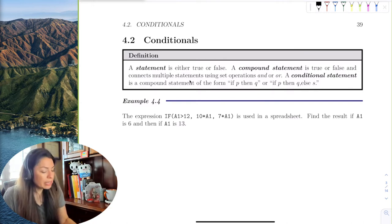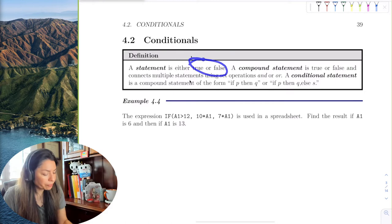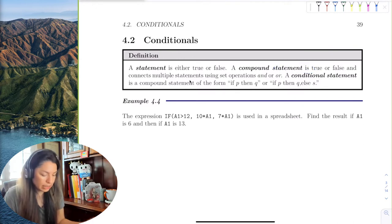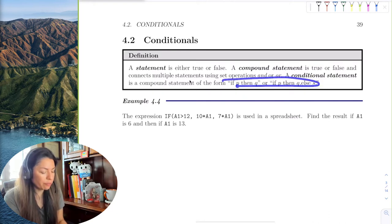A statement is either true or false, and a compound statement is the statement that is true or false connected by 'and' or 'or'. A conditional statement is of the form 'if P then Q'.